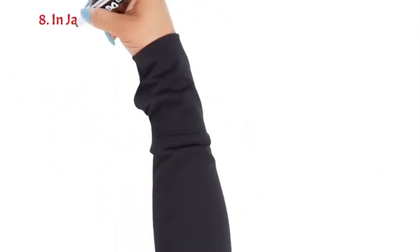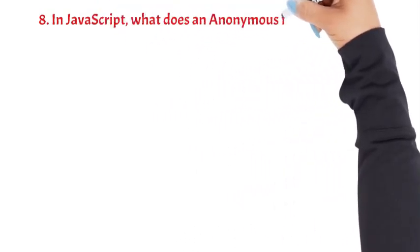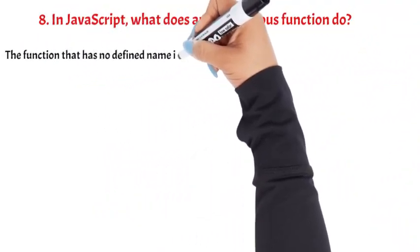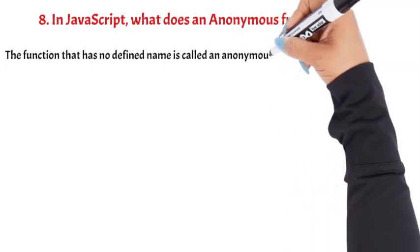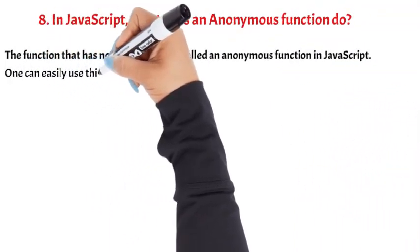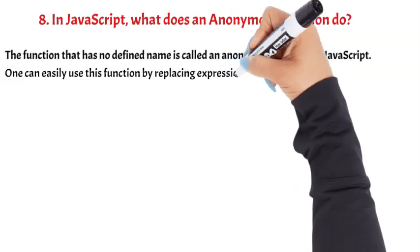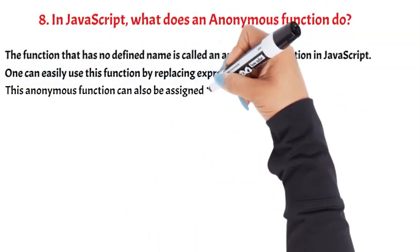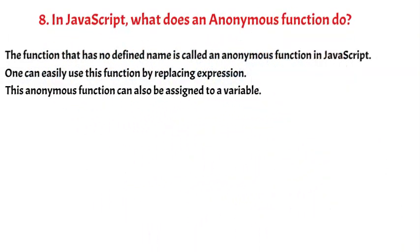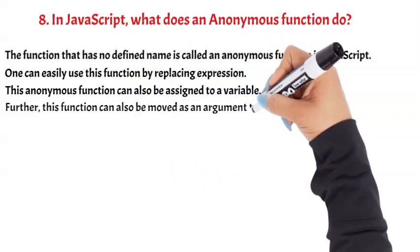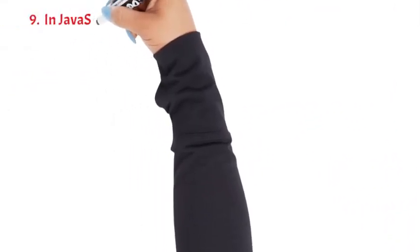Question 8: In JavaScript, what does an anonymous function do? The function that has no defined name is called an anonymous function in JavaScript. One can easily use this function by replacing an expression. This anonymous function can also be assigned to a variable, and can also be passed as an argument to a different function.